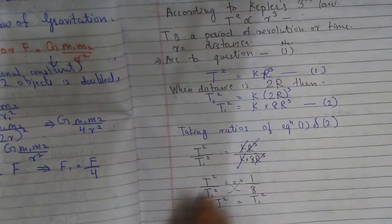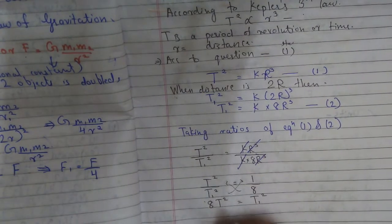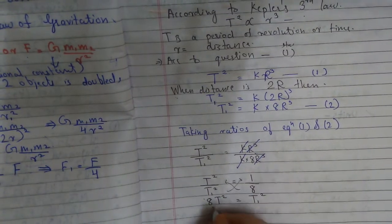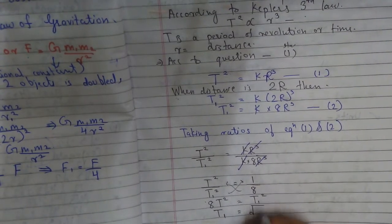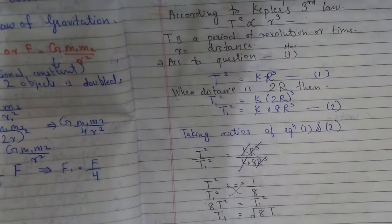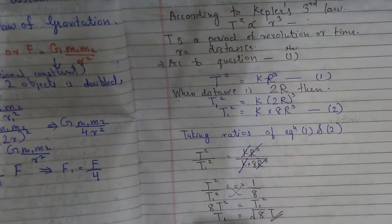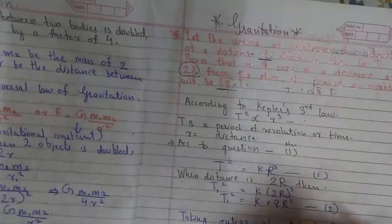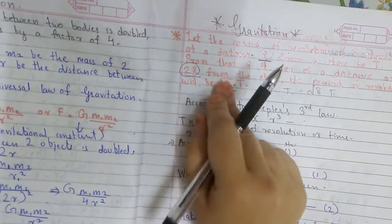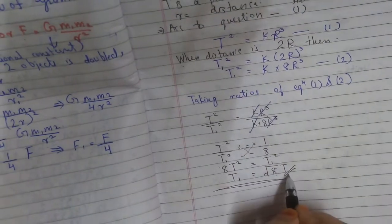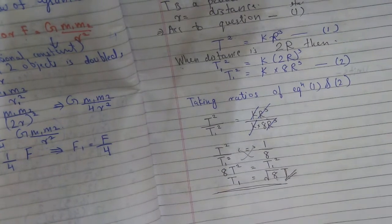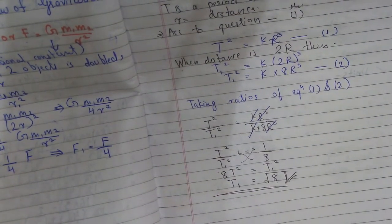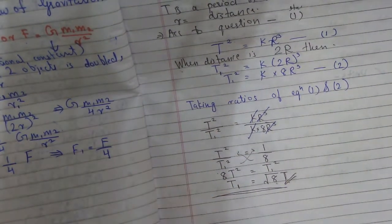Taking the square root of both sides, we get T₁ = √(8T). This is what we had to prove: when the distance is 2R from the star, its period of revolution will be √8 times T. I hope you all understood this properly. Thank you.